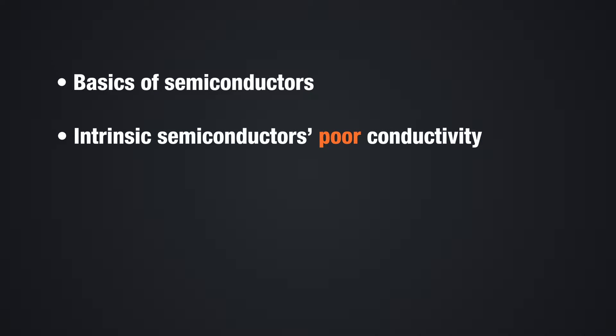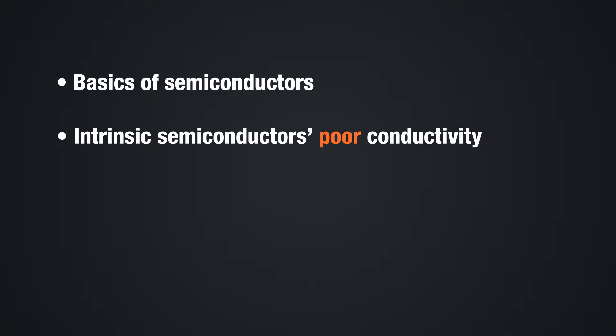So in this video, we talked about the basics of semiconductors, the intrinsic semiconductor and its poor conductivity, how doping increases the number of current carriers in a semiconductor material, and improves its conductivity. We also briefly mentioned how different semiconductor devices were created based on the P-n junction.